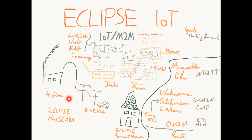At the ecosystem level, we look at projects like 4DiAC, Eclipse NeoSCADA, and RISE V2G. Those are components that can be taken to build complete industrial end-to-end solutions. At the component level, we have software that can run on embedded devices, components that run on a hub or gateway device to facilitate message forwarding, and even solutions that run in the cloud to provide services or analytics.